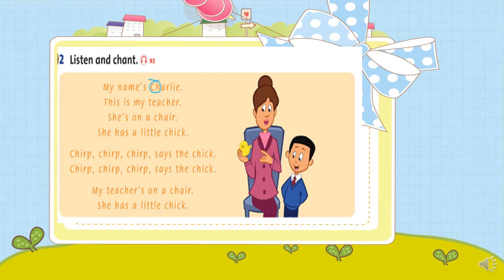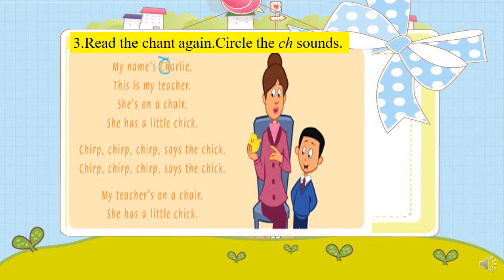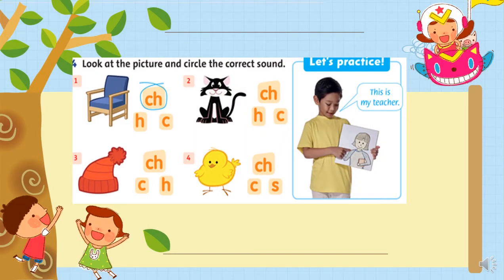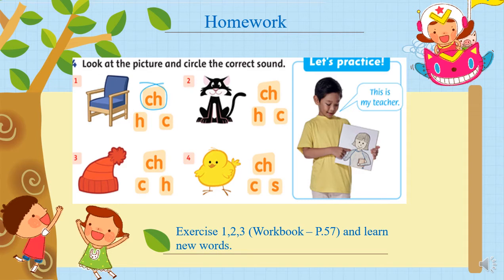My teacher's on a chair, she has a little chick. And now we will read the chant again. Circle the sounds, look at the sentence too — 'This is my teacher', so we will circle. And the next sentence: 'She's on a chair', so we will circle. The next sentence you can do at home. Look at part four: look at the pictures and circle the correct sound. That's your homework. And remember, do exercises 1, 2, 3 in workbook page 57 and learn new words.